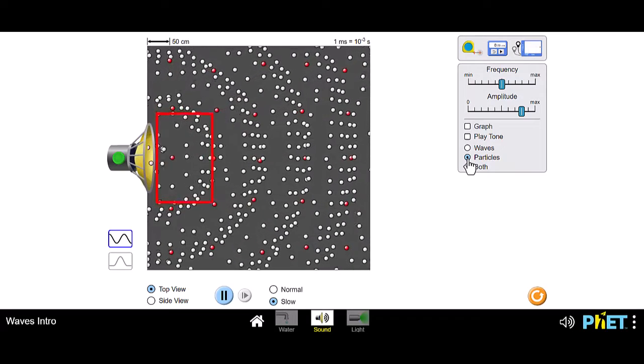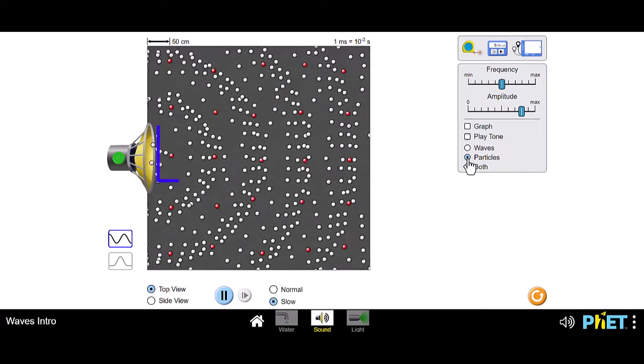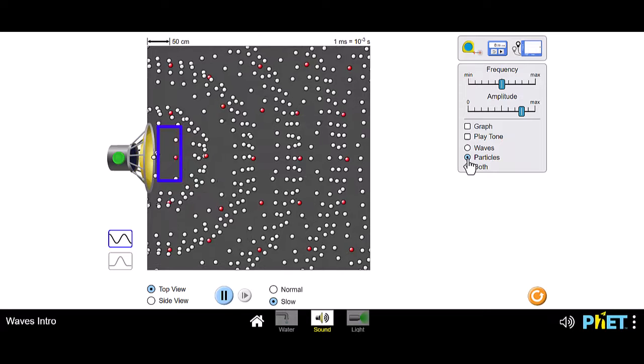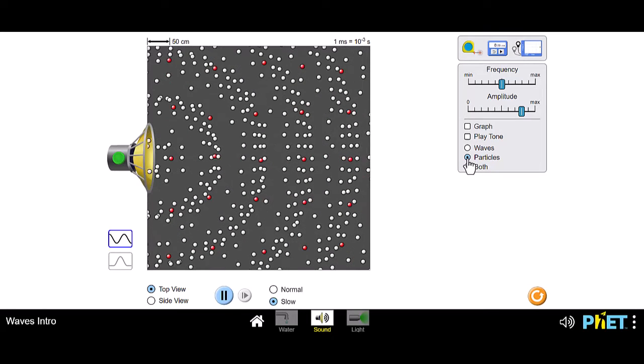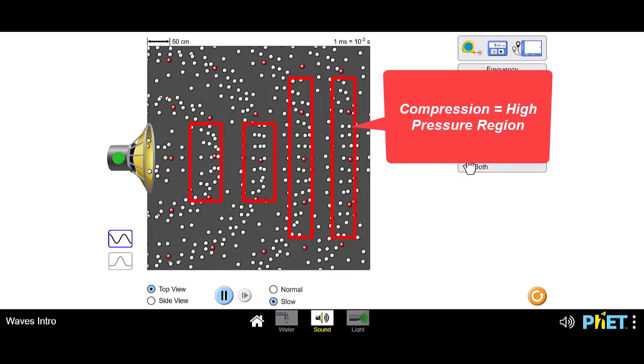Since most of the particles of air have moved forward, then it creates a low pressure region as well, just behind the high pressure region. The high pressure region is usually known as compression and the low pressure region is known as rarefaction.